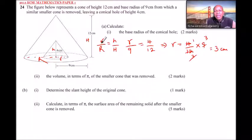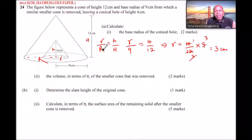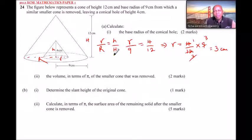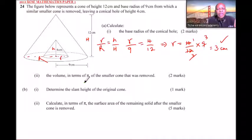It is important to note that you can also start with capital R divided by small r and set it equal to capital H divided by small h — it will still give you a constant, as long as you arrange the corresponding sides of the big cone and small cone properly.